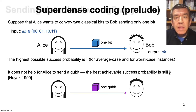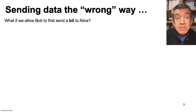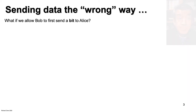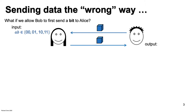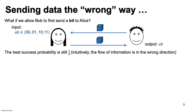Now let's add a twist. What if we allow Bob to send a bit to Alice before Alice sends her message to him? Alice receives her bits, Bob sends a bit to Alice, then Alice sends a bit to Bob, and then somehow from this Bob is supposed to determine A and B. That extra bit of communication from Bob does not help. Intuitively, this is because the flow of information is in the wrong direction. To be sure there isn't some subtle way in which Bob's message helps, we would need to think about this carefully, but let's just accept without proof that the best possible success probability still comes out to one-half.